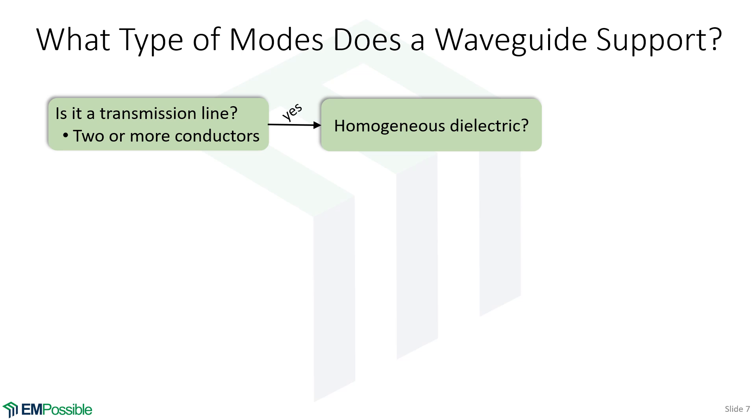So if it is a transmission line, the next thing I ask myself, does it have a homogeneous fill? Are there any field lines that penetrate more than one dielectric? If the answer is yes, that it has a homogeneous fill, so the field lines stay in the same dielectric the whole time, that transmission line supports TEM. This is typically the only mode that's used in a transmission line. But if you go to a high enough frequency, then you'll start seeing TE and TM modes as well.